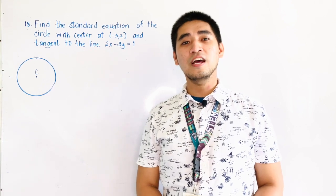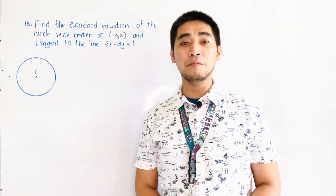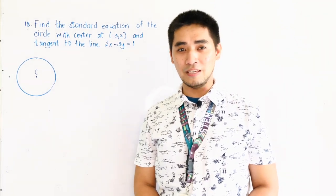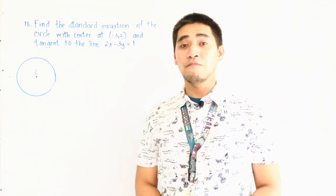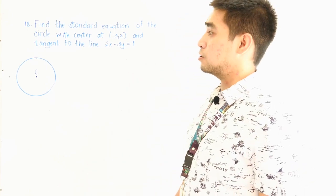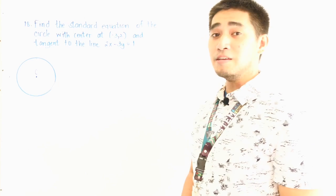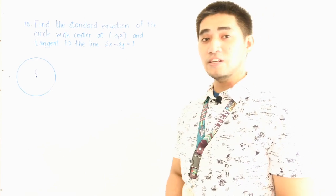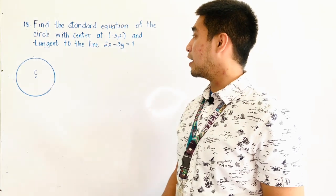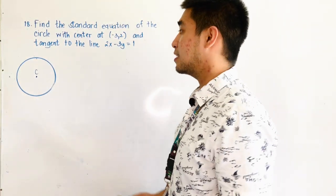Hi Judgers! Welcome to another segment of 1R Liwag Memorial High School Senior High School Math TV. For today's video, we're asked to find the standard equation of the circle with center at negative 3, positive 2, and tangent to the line 2x minus 3y is equal to 1.